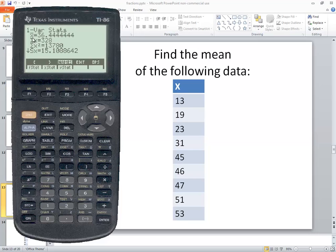This gives us X-bar, which is our sample mean. It's also our population mean. Rounded to two decimal places, it would be 36.44.